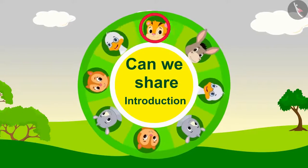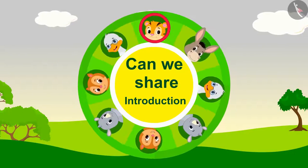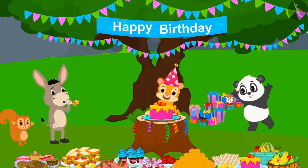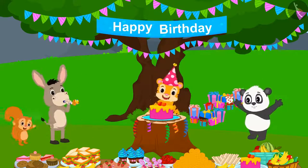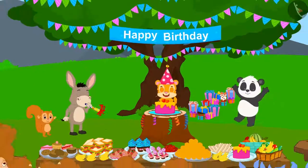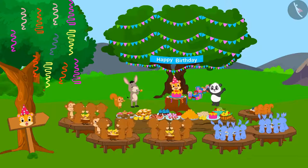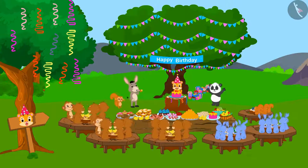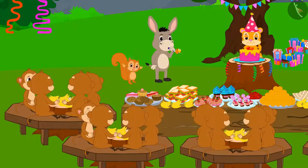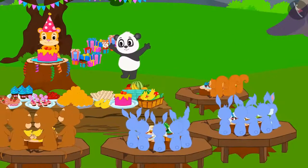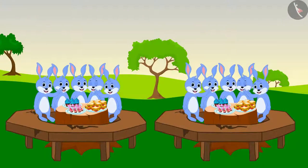Division: Equal Grouping. Today, it is the king of the forest, Shere Khan's birthday. All the animals of the forest have been invited for the birthday celebrations. Different animals are sitting in groups. Let us see how the rabbits are sitting.